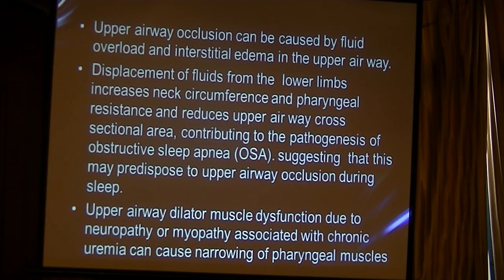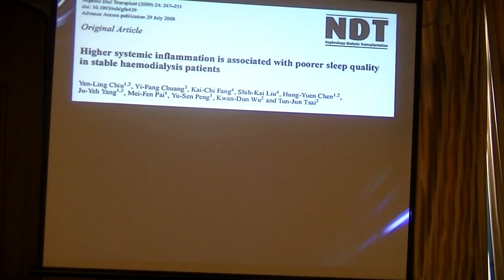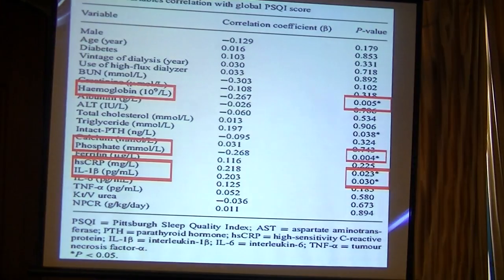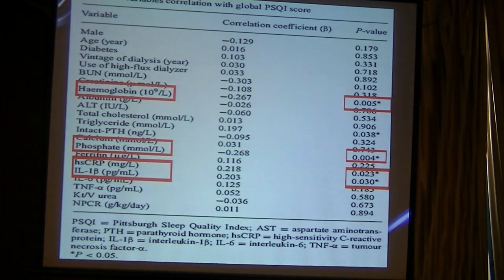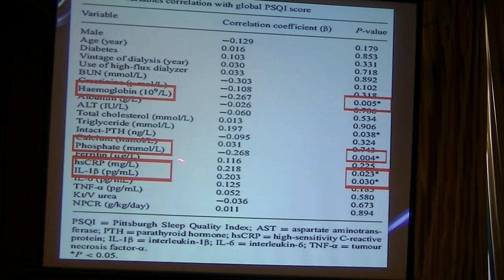Upper airway dilator muscles may be dysfunctional due to neuropathy or myopathy associated with chronic uremia, causing narrowing of the pharyngeal muscles. Sleep disorder prevalence is also associated with higher systemic inflammation, as shown by a high significant correlation between sleep disorders and C-reactive protein and interleukin-1.